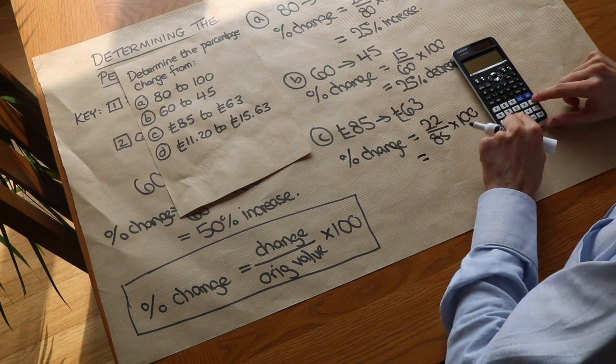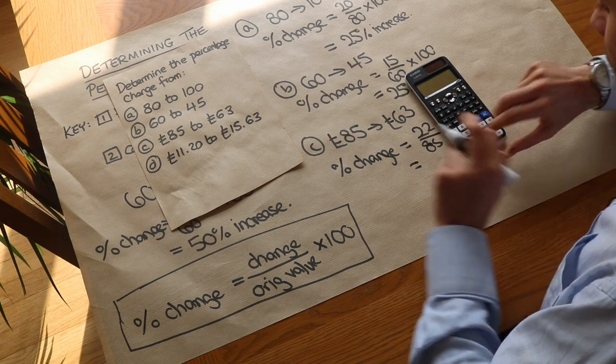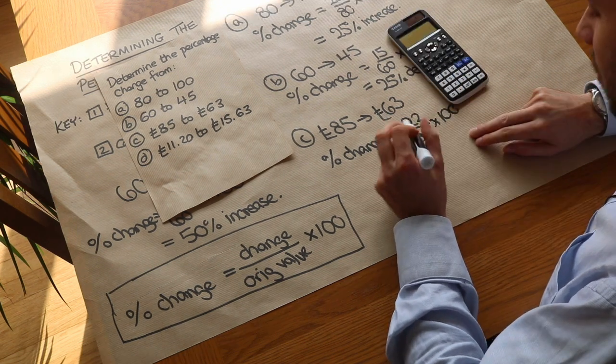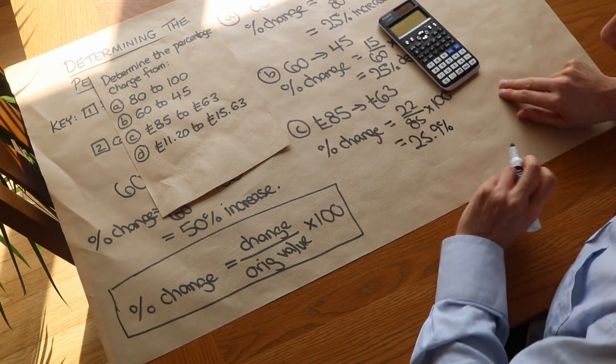So if I do that in a calculator, 22 divided by 85 times by 100, press the SD key. It's 25.9 percent to three significant figures.